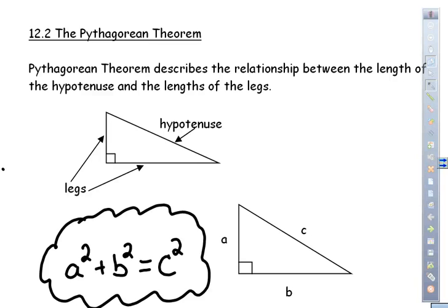All right, 12.2, the Pythagorean Theorem. The Pythagorean Theorem describes the relationship between the length of the hypotenuse and the lengths of the legs. Now, what we need to understand is what the legs and the hypotenuse are.